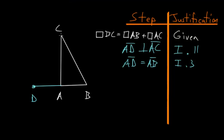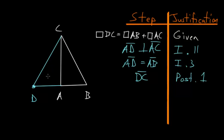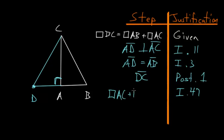Now let's connect points D and C, which we can do because of Postulate 1. Focusing on triangle CAD: since we constructed AD perpendicular to AC, this angle here is right. Since we have a triangle with a right angle, we can use the Pythagorean theorem — Book 1, Proposition 47. So the square on AC plus the square on AD equals the square on the hypotenuse DC.